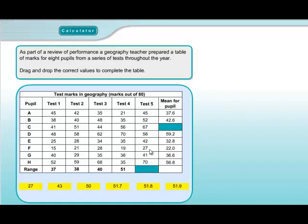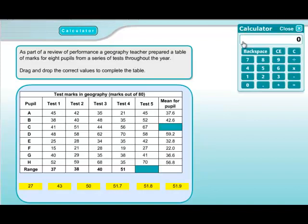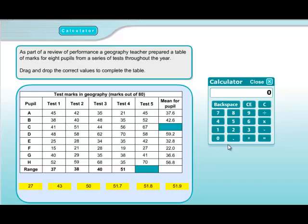We need to do 70 take away 27. Practising mental arithmetic: 70 minus 30 plus 3 gives 43. But if you're shaky on the mental maths, we'll just use the calculator to confirm: 70 minus 27 gives 43. That is one of our possible answers, so we drag that into place.